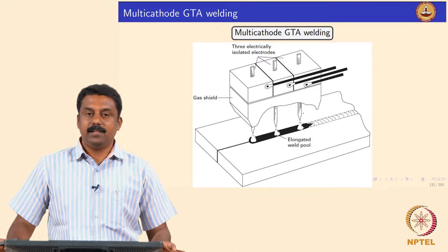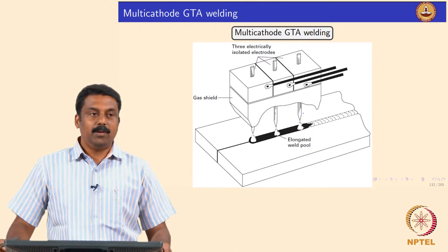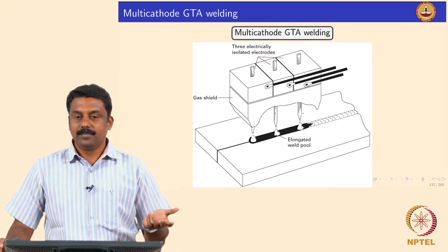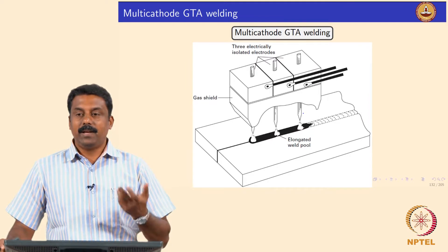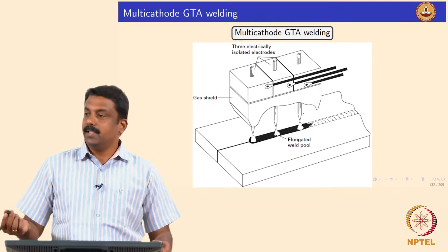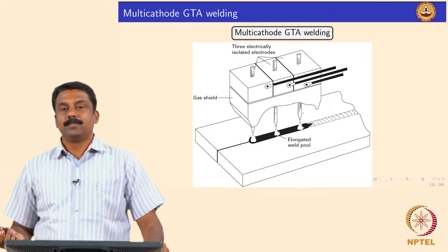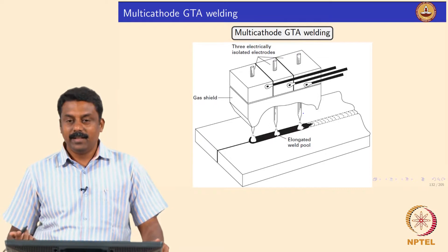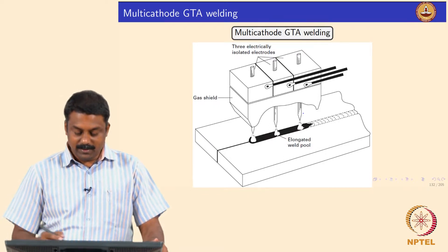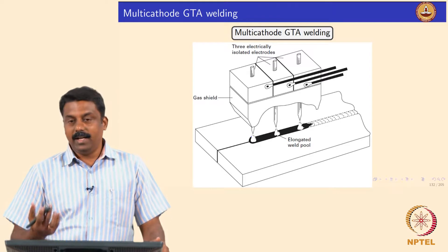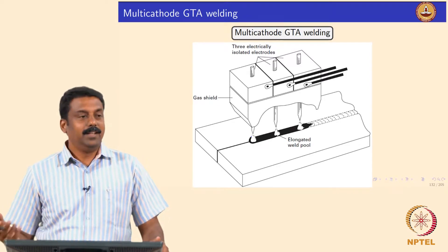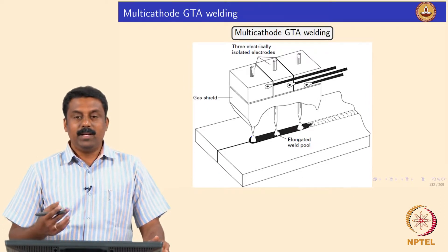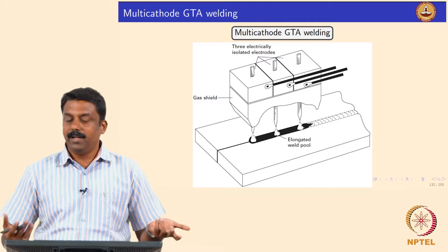In a very high energy density process you always have an undercut, meaning penetration may not be achieved without a keyhole. We can also use a multi-cathode TIG process to melt more volume and increase productivity. You can avoid the undercut by melting more volume so the liquid can flow and fill the weld cavity.